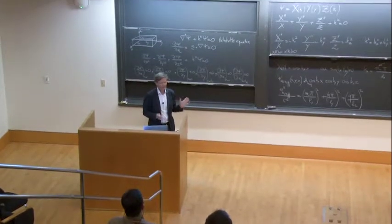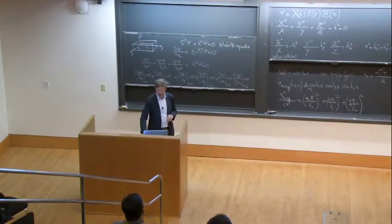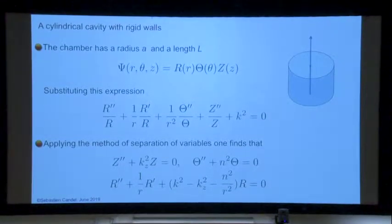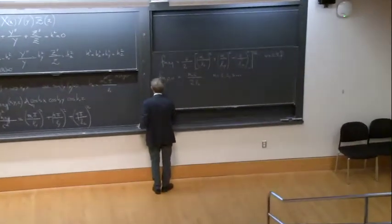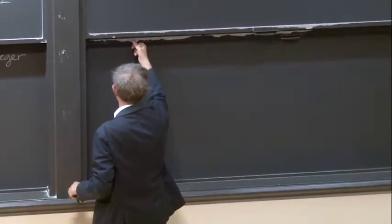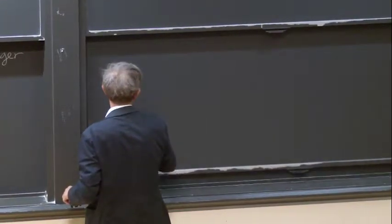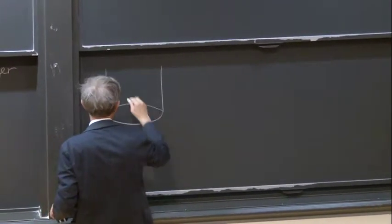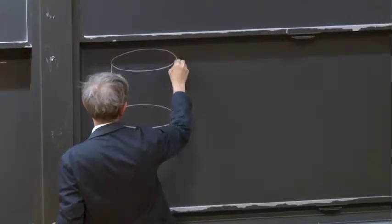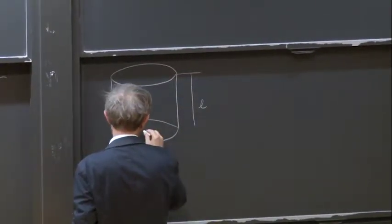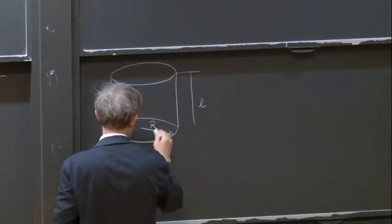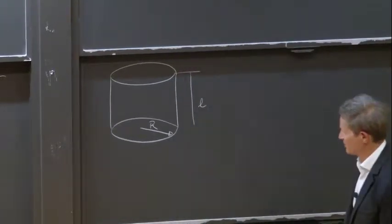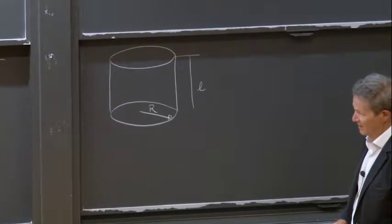Any question on this derivation? So now we have to look at a little more complicated cavities — for example, cylindrical cavities. Why cylindrical? Because some devices are cylindrical. This is a cylinder. The size of this cylinder is L and the radius is R. So now the problem is best written in terms of cylindrical coordinates.